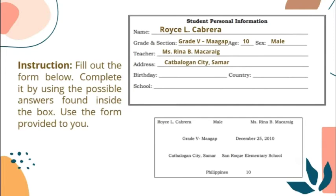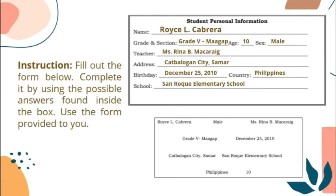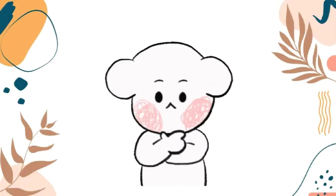How about the birthday? Exactly — December 25, 2010. What about the country? Very good — the country is the Philippines. For the last one, what are we going to write in school? Great job — the school of Royce is San Roque Elementary School. Did you get all the right answers? It's good to know if you already have the knowledge about filling out important forms. If you didn't get all the correct answers, you can master the significant points if you give your full attention to our lesson today.